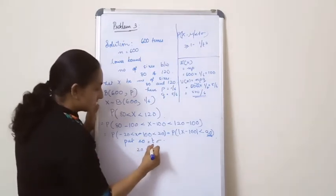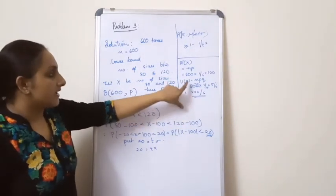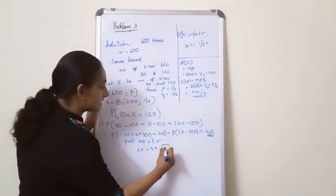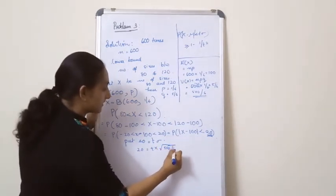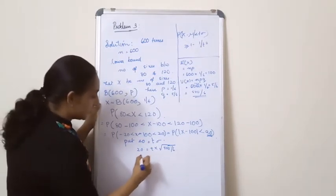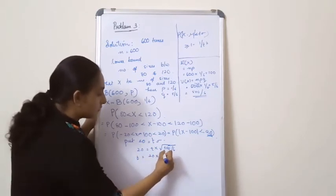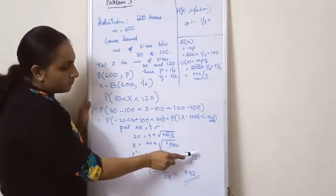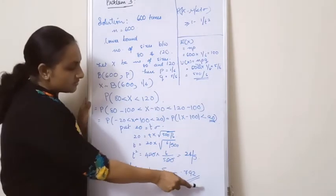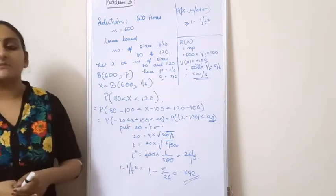So 20 equals T into sigma, and the variance is 500 by 6, so sigma is root of 500 by 6. T squared works out to 24 by 5. Then 1 minus 1 by T squared equals 1 minus 5 by 24, which is equal to 0.792, and this is the lower bound for this particular problem.